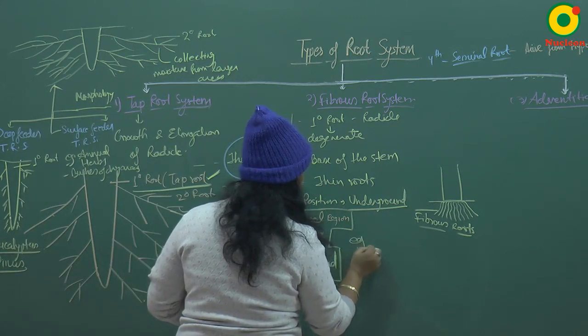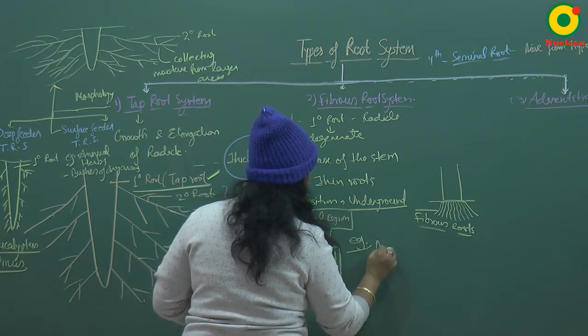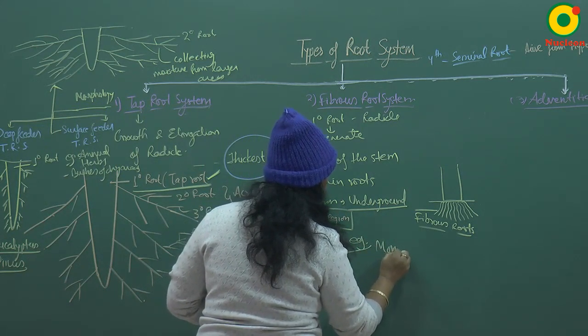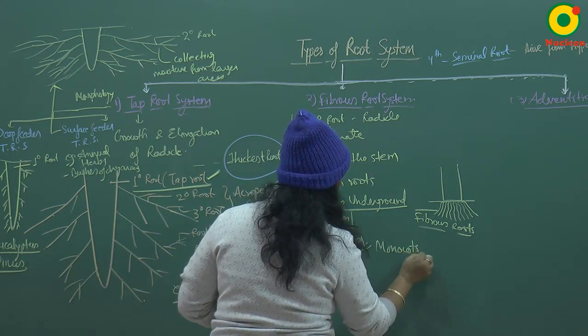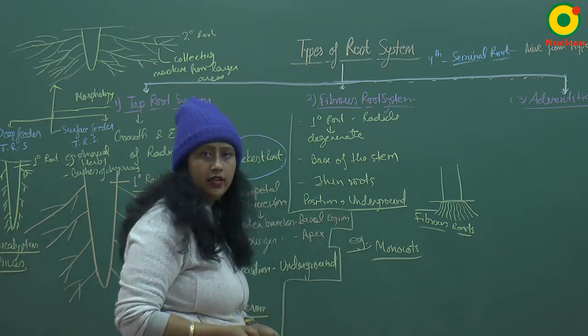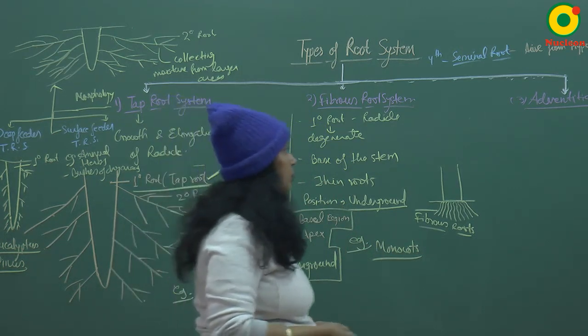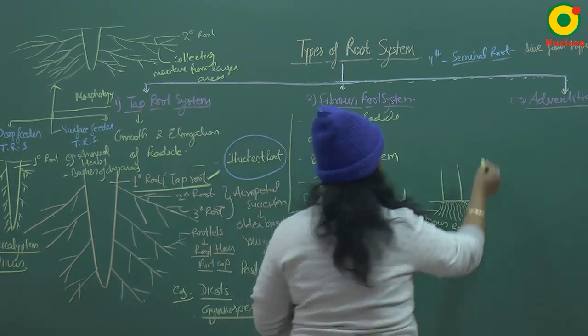Fibrous roots are generally present in monocots. The third type of root system is the adventitious root system.